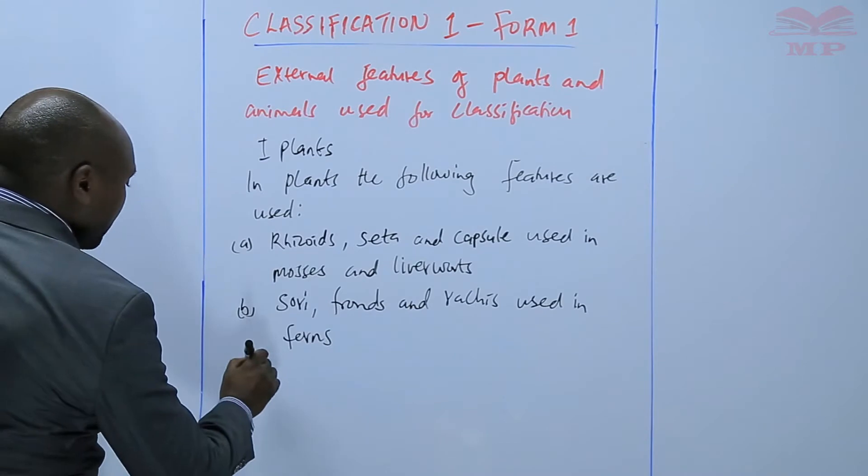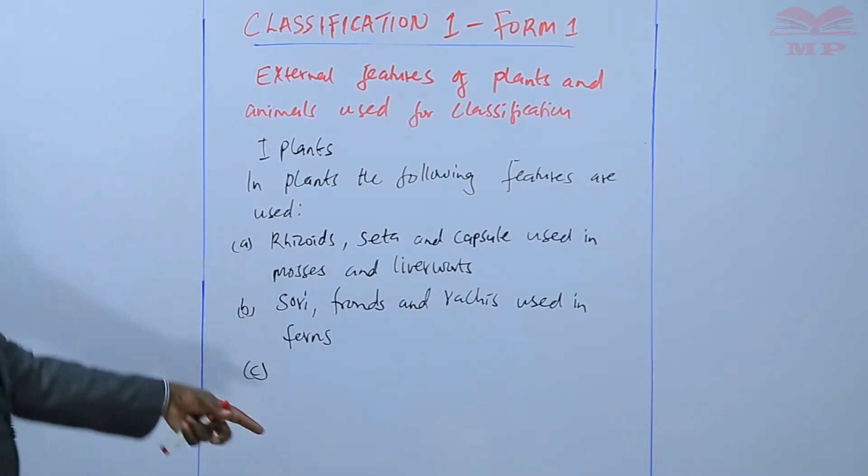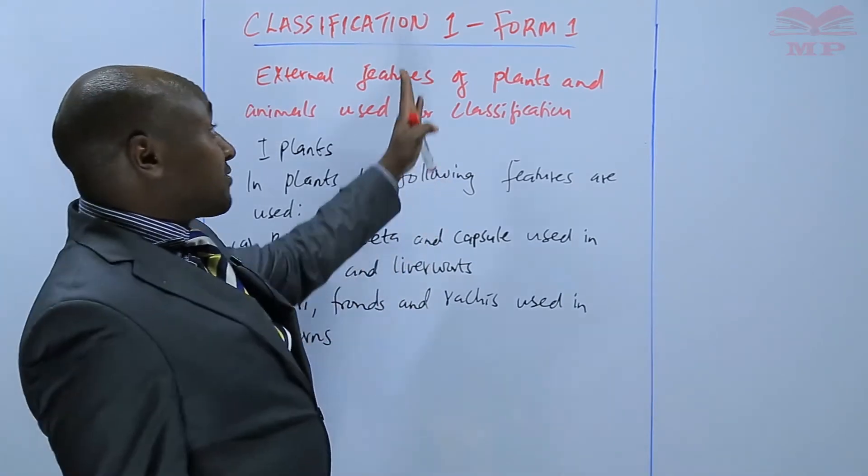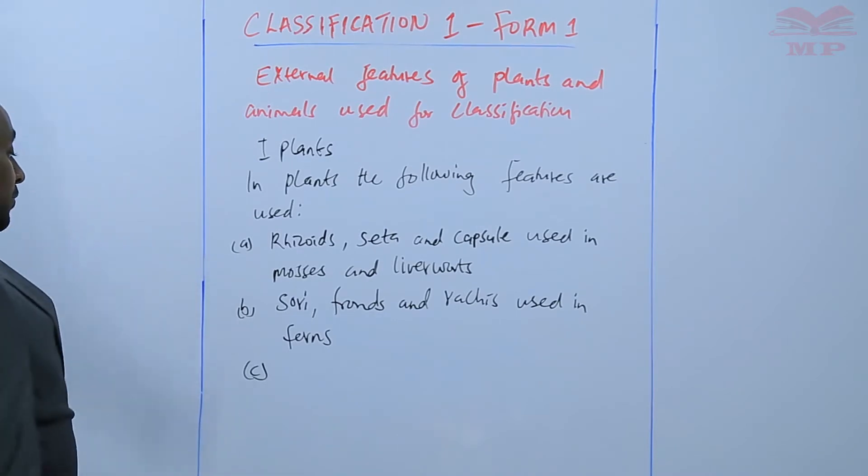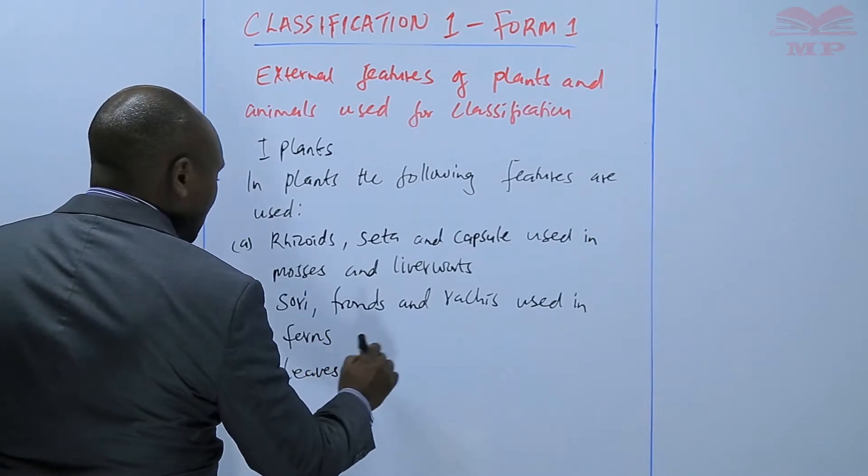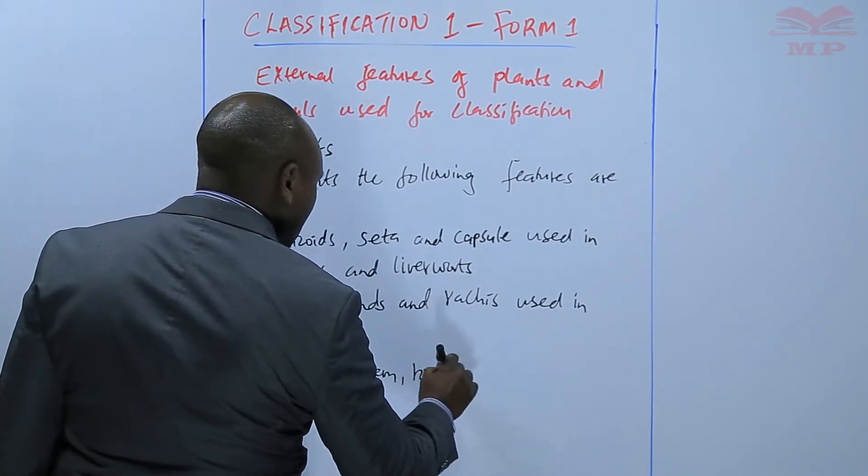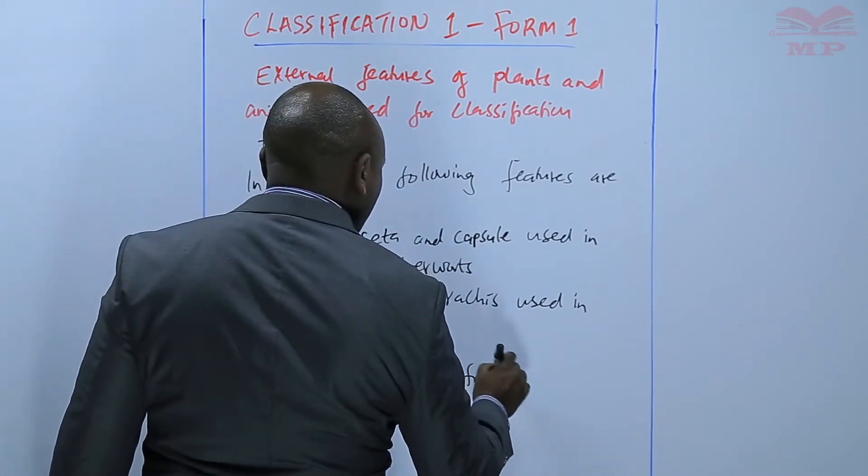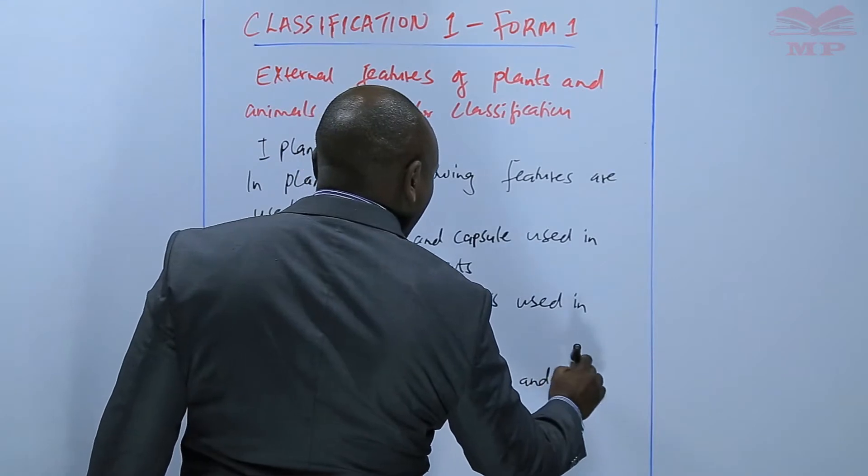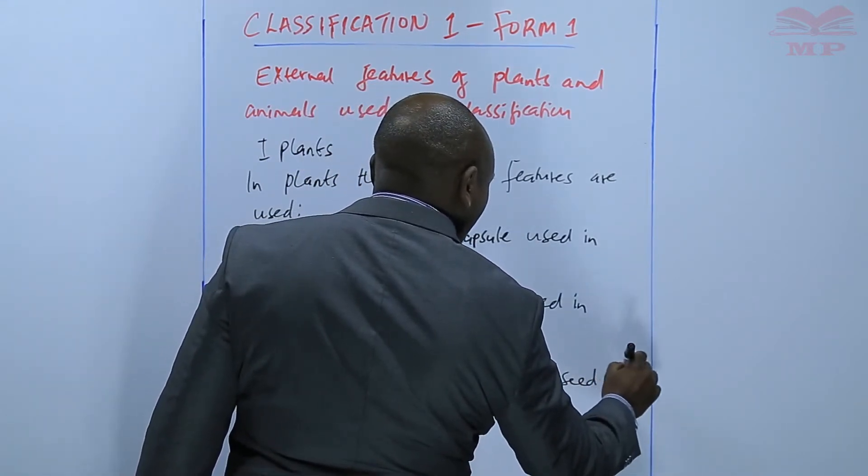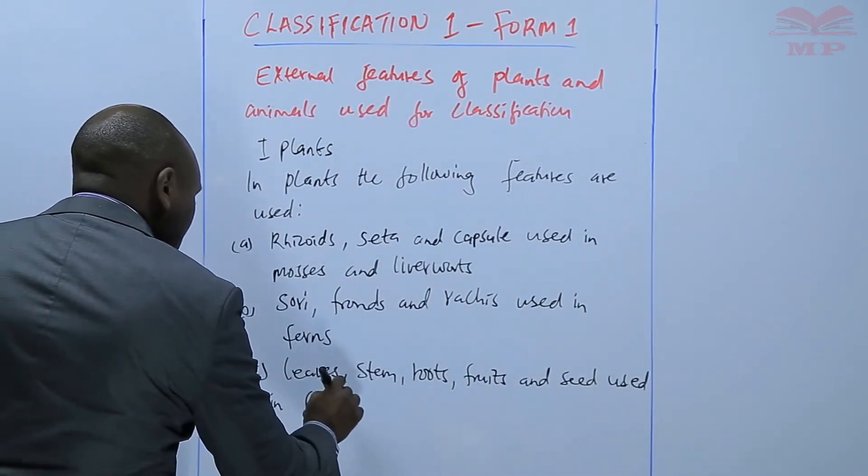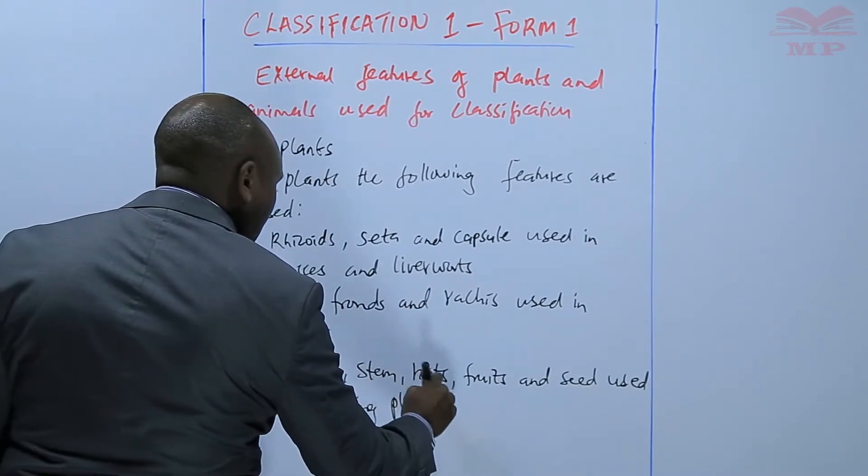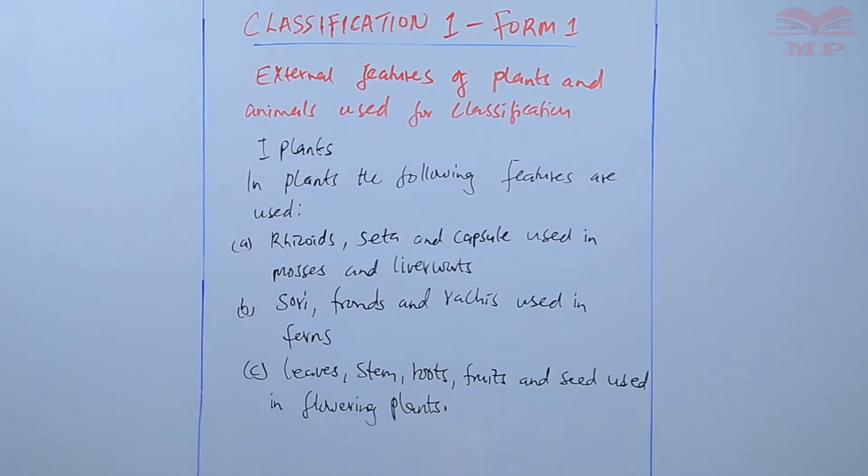But the most common feature that we are very familiar with, of course the first two will come across them much later when we do classification number two. But the most common ones of the higher plants that we have, we use the leaves, we use the stem, the roots, we even use the fruits and seeds. These ones are used in flowering plants. The higher plants that we have are the ones that we refer to them as flowering plants.